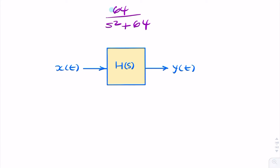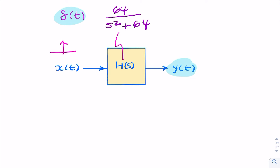In this question, we're given the transfer function of a linear time-invariant system, and we're asked for the output if the input happens to be a unit impulse. What do we call the output when the input is an impulse? We call that the impulse response, h of t. So what we're after is the impulse response.